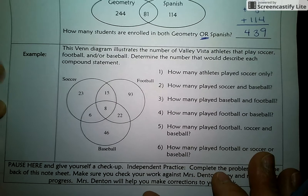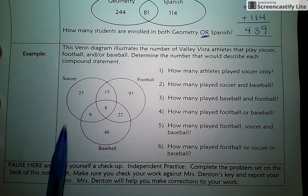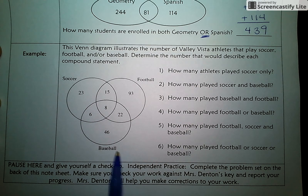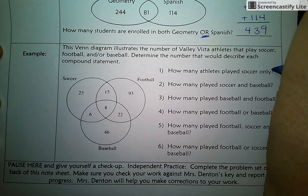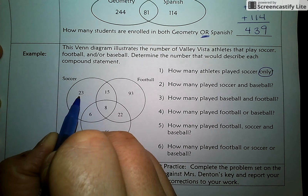Let's do a couple of examples. We're back to our sports theme, and this time we've revved it up a notch. We have a Venn Diagram that represents three different sports teams, illustrating the number of Valley Vista athletes that play soccer, football, and/or baseball. We have to be really careful with the verbiage used. How many athletes played soccer only? This means they can't play any other sport except soccer — that would be this 23 that's independent here.